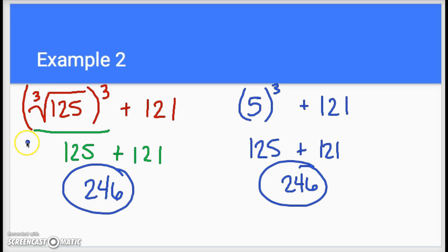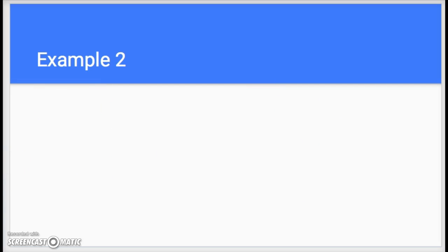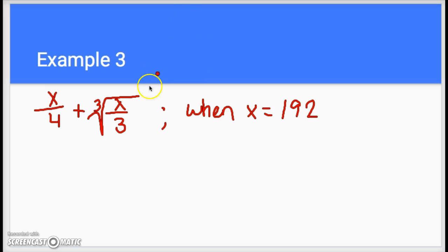Now we're going to start looking at some algebraic examples where they start throwing in some variables in there. It's actually really easy because all of these, they're going to throw some variables in there, but then they're going to tell you what the variables equal and you just have to plug the numbers in. So we have x over 4, or x divided by 4, plus the cube root of x over 3.